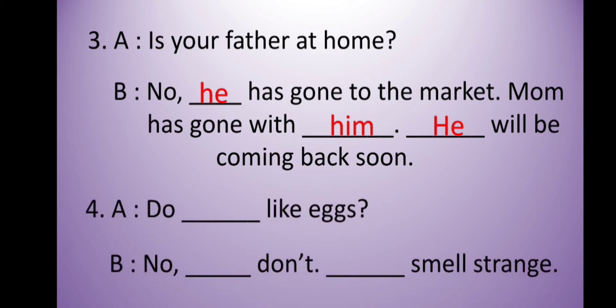The next one is: 'do dash like x?' I am asking a question to you, so in the blank I will fill which pronoun? Yes, we will fill 'you.' The question is 'do you like x?' In return, you answer: 'no, dash don't. Dash smells strange.' We are talking about x. In the first blank we use 'I' because you are answering. So 'no, I don't.' In the next blank, x is a thing, so we use 'it.' The answer is: 'no, I don't. It smells strange.'